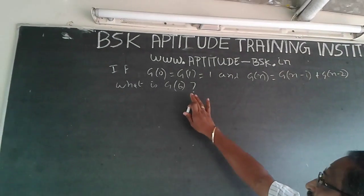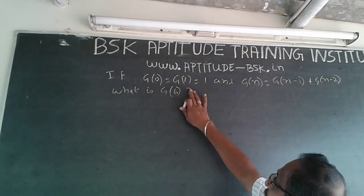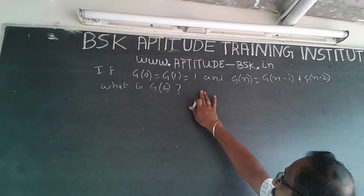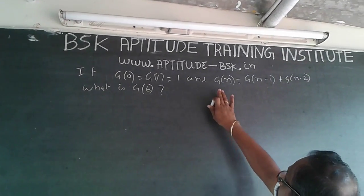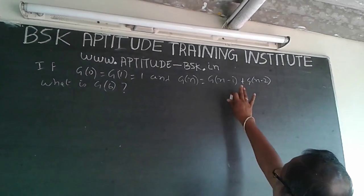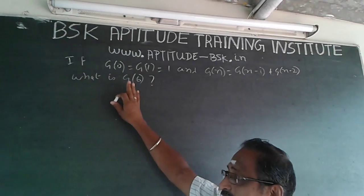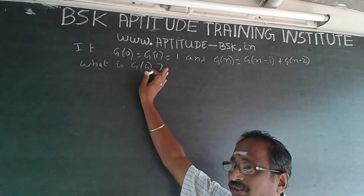The question is: if g of 0 is equal to g of 1 is equal to 1, and g of n is equal to g of n minus 1 plus g of n minus 2, what is g of 6?